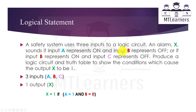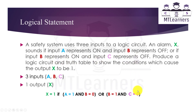The next statement connects via an OR gate. So we write OR, and then: input B represents on, so B equals to 1, AND input C represents off, so C equals to 0 — that is C inverse. All of these conditions must be true for X equals to 1, so we place parentheses around these two statements.